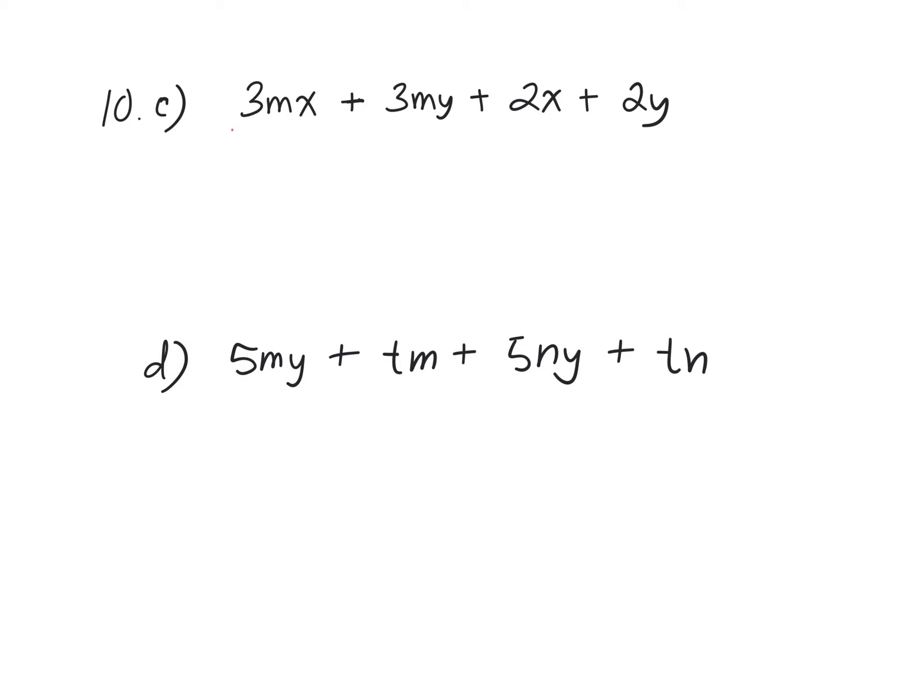So the common factor for the first two terms is 3M. What am I left with? If I divide this by 3M, I'm left with, and if I divide this by 3M, I'm left with positive Y.